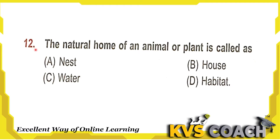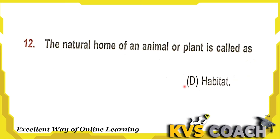Question 12: the natural home of an animal or plant is called as what? Option A is nest — built by animals or birds. Option B is house — built by humans. Option C is water — aquatic animals live there. Option D is habitat — the common term for all animals' natural home. So option D is the right answer.